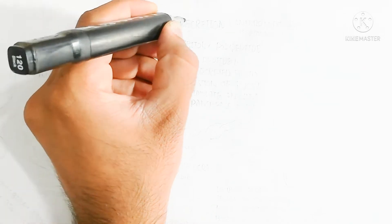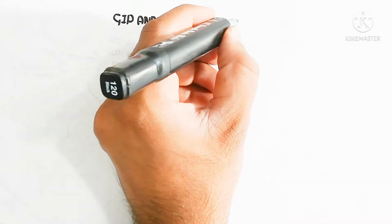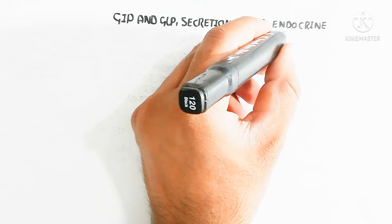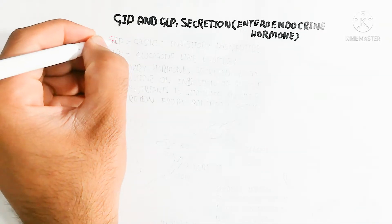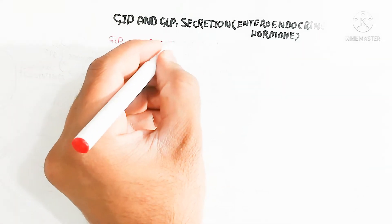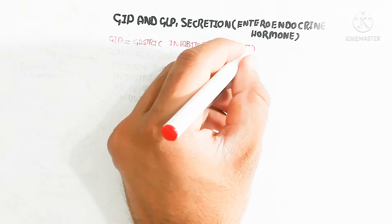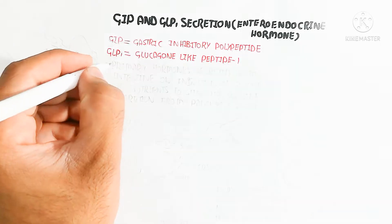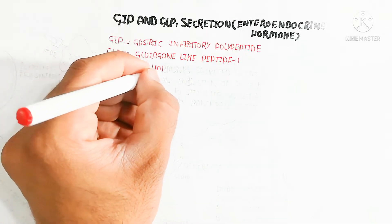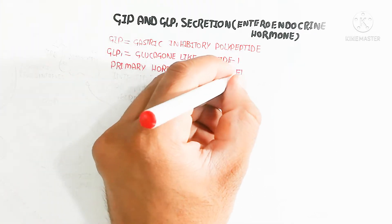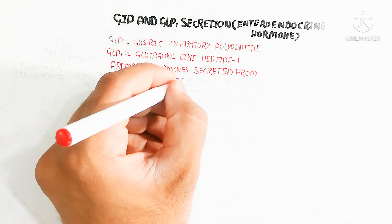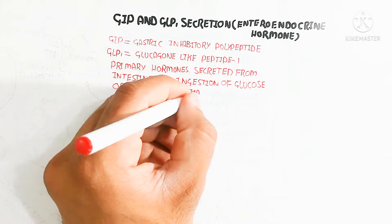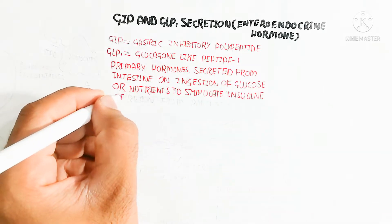In this video we will discuss GIP and GLP-1 secretion, known as enteroendocrine hormones produced from enteroendocrine cells present in the gastrointestinal tract. GIP is the gastric inhibitory polypeptide and GLP-1 is the glucagon-like polypeptide-1, which play a functional role in stimulating the uptake of insulin into the blood circulatory system from the pancreas. The primary hormone secretion from the intestine on ingestion of glucose and nutrients stimulates insulin secretion from the pancreatic beta cells — remember, the beta cell is the target for GIP and GLP-1.